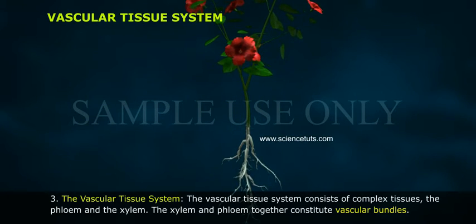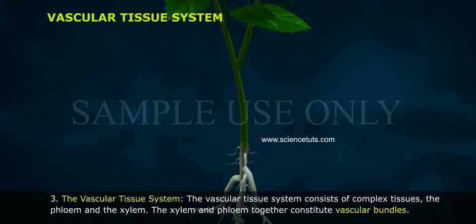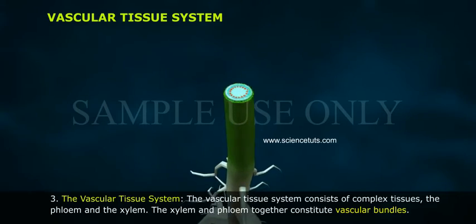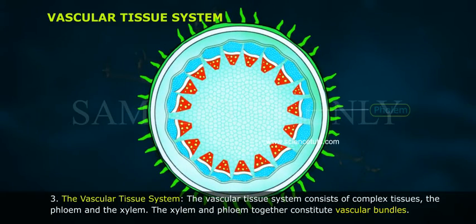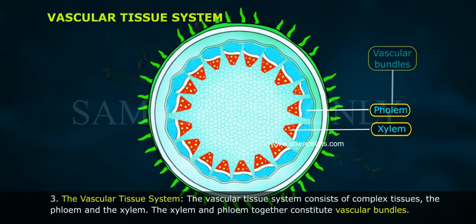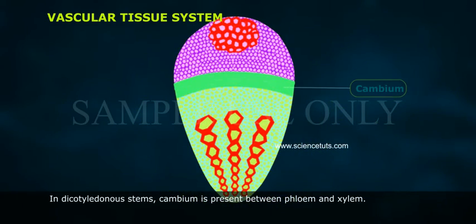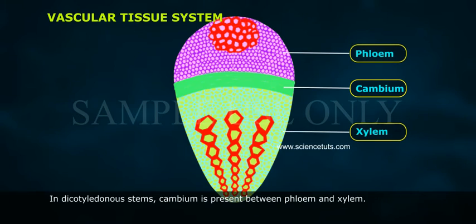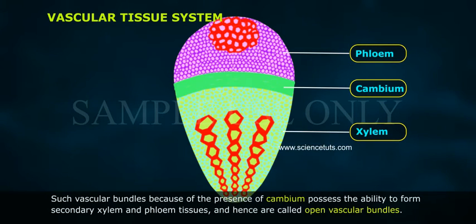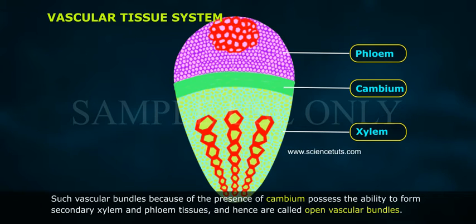The Vascular Tissue System consists of complex tissues — the phloem and the xylem. The xylem and phloem together constitute vascular bundles. In dicotyledonous stems, cambium is present between phloem and xylem. Such vascular bundles, because of the presence of cambium, possess the ability to form secondary xylem and phloem tissues, and hence are called open vascular bundles.